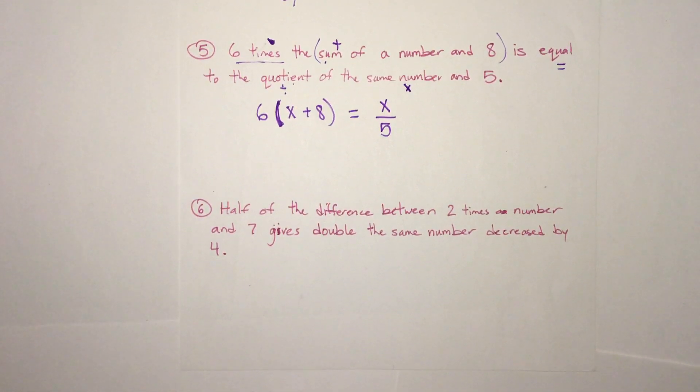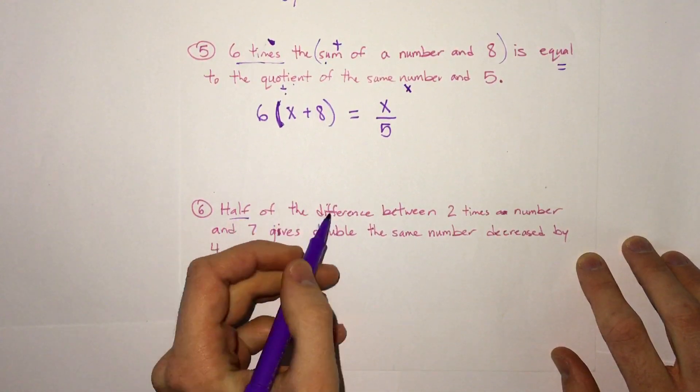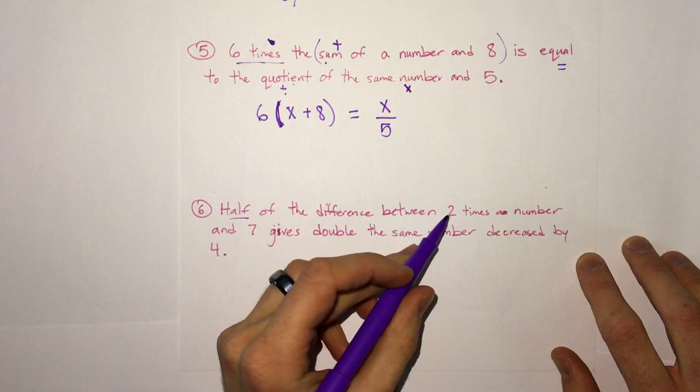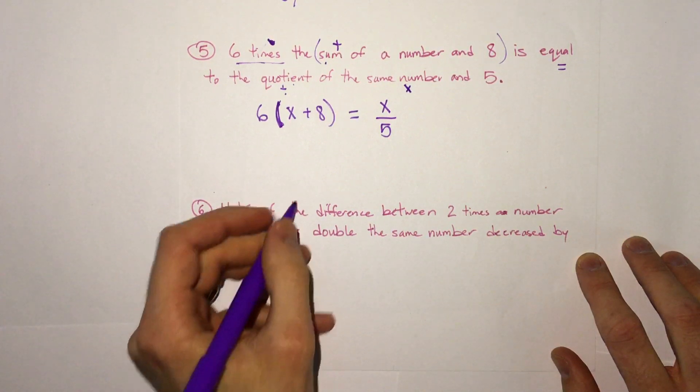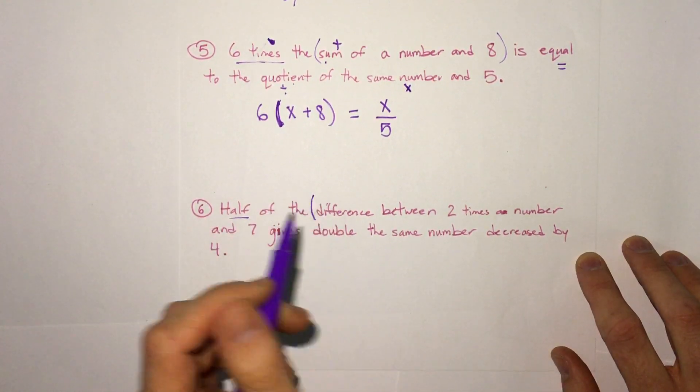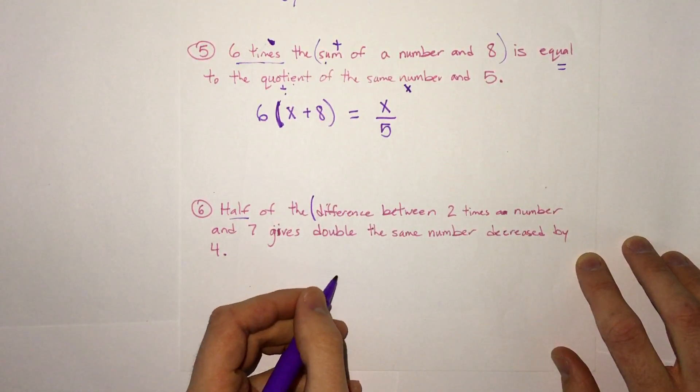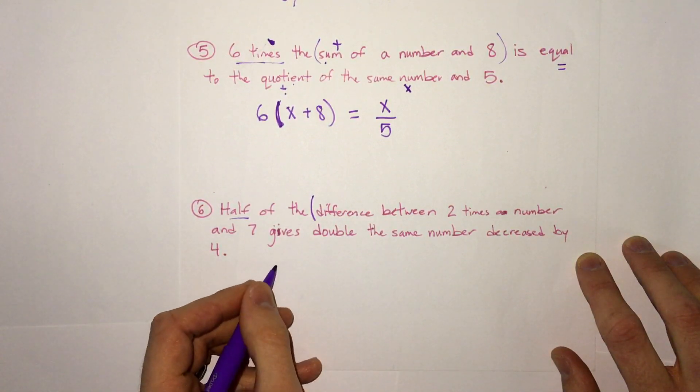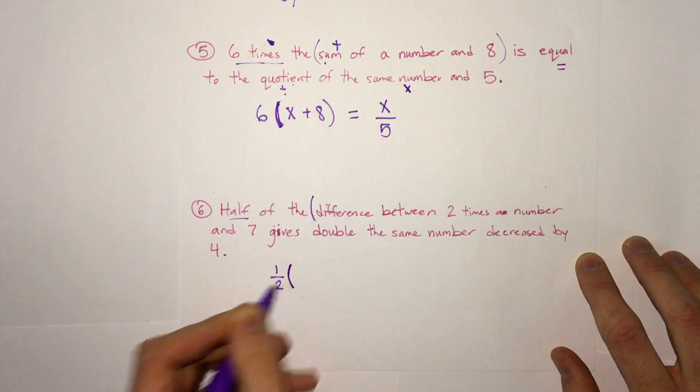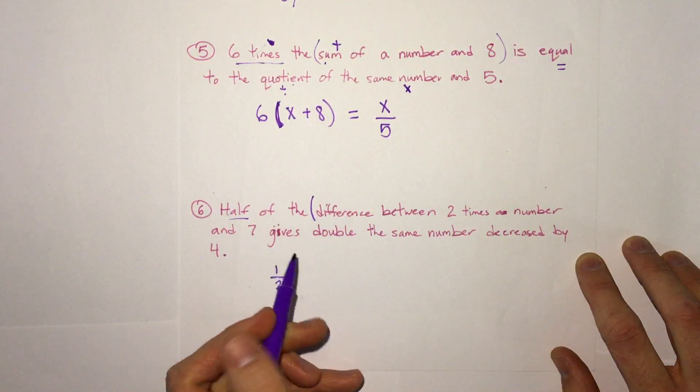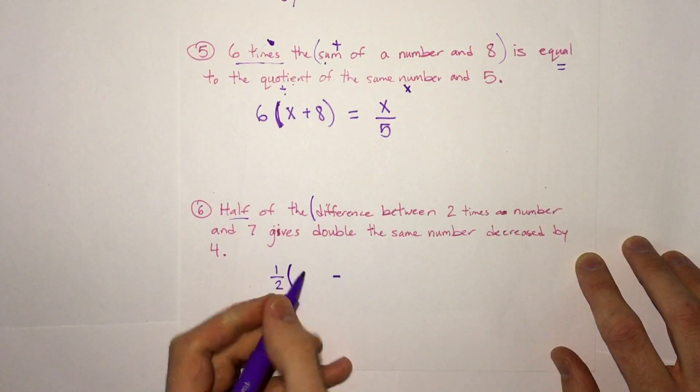Number six. This one we see the word half. So half of the difference between two times a number and seven. So let's stop there. They say half of the difference. And then we go on from there. We can write half as divided by two or times one half. So I'm going to actually write it as times one half outside and put a parentheses. And then it says the difference.